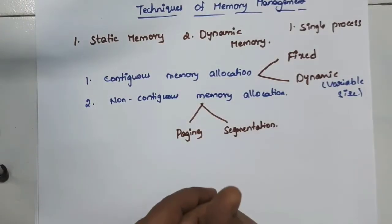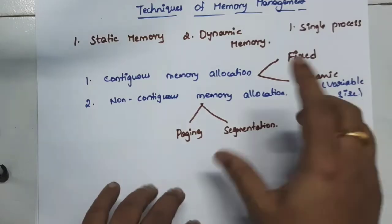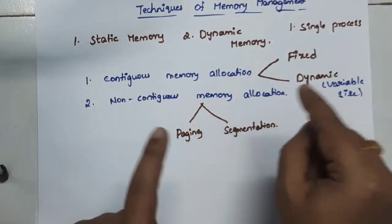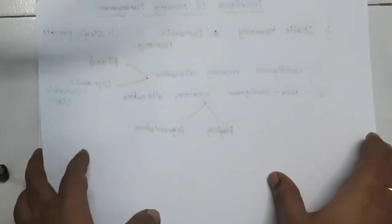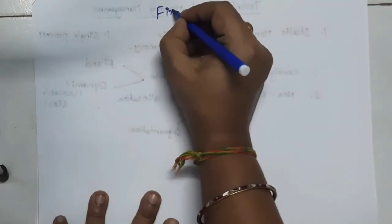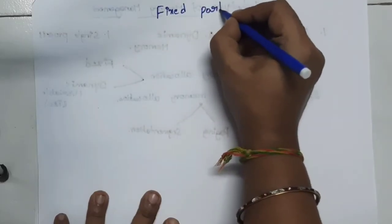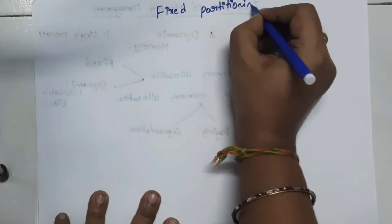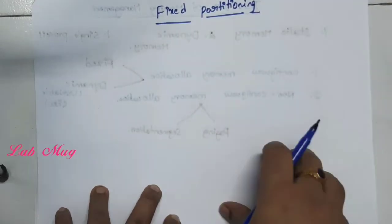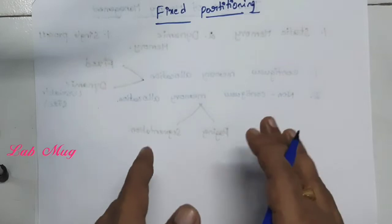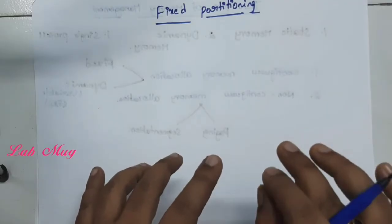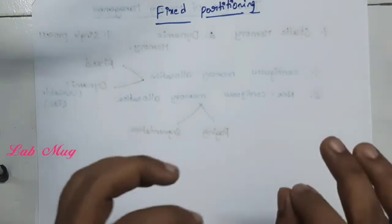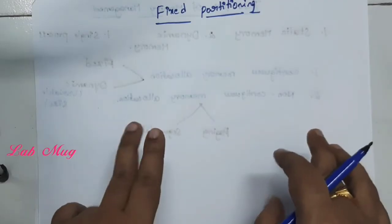The next concept — in the previous class we chose techniques of memory management. The type of continuous memory allocation is divided into two categories. The first category is fixed memory allocation, that is fixed size partition. Fixed partition means it is the category from continuous memory allocation.